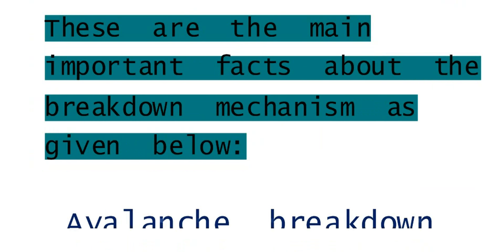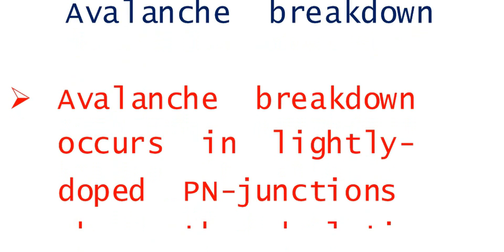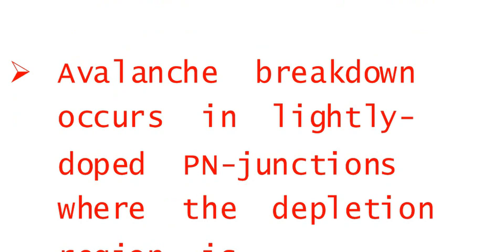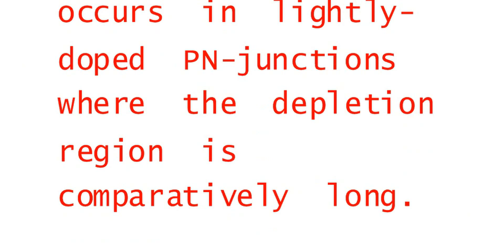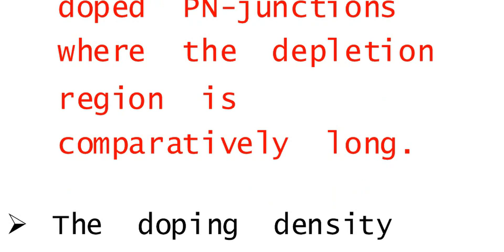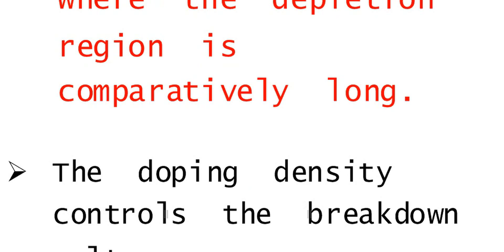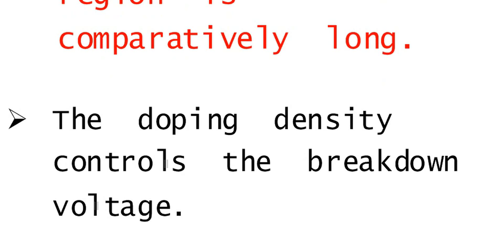For avalanche breakdown, there is no need for heavy doping — it requires a lightly doped PN junction. With light doping, the depletion region becomes wider. With a wider depletion region, minority carriers generated by thermal energy get a chance to accelerate, and the doping density controls the breakdown voltage.